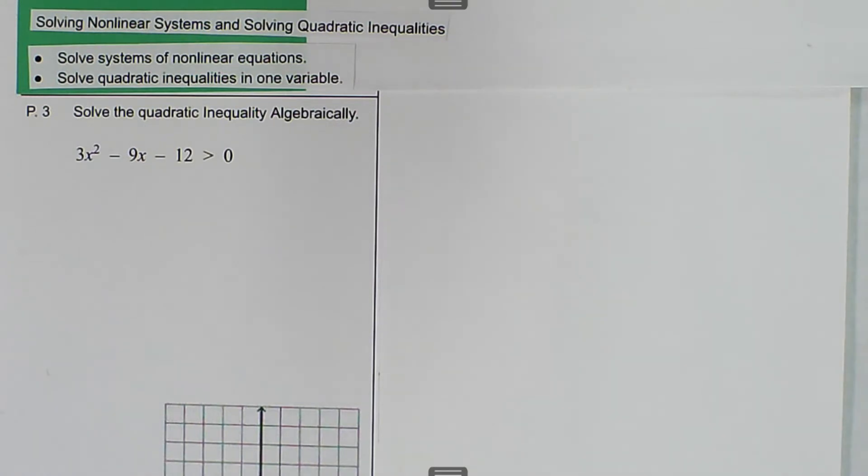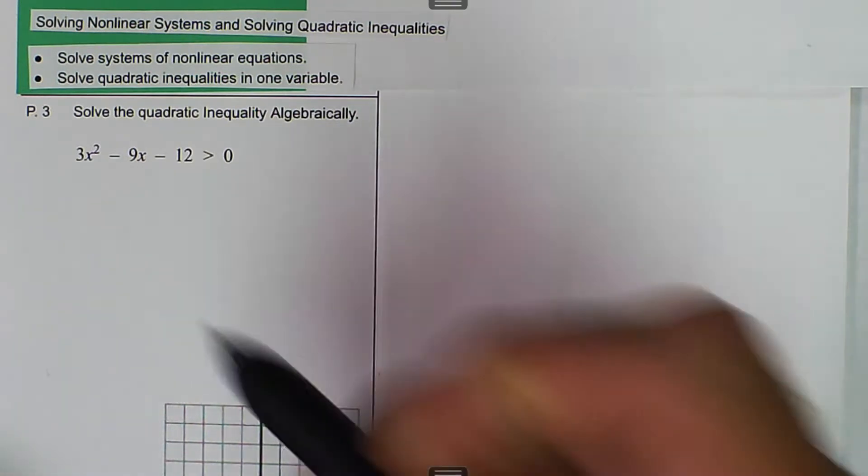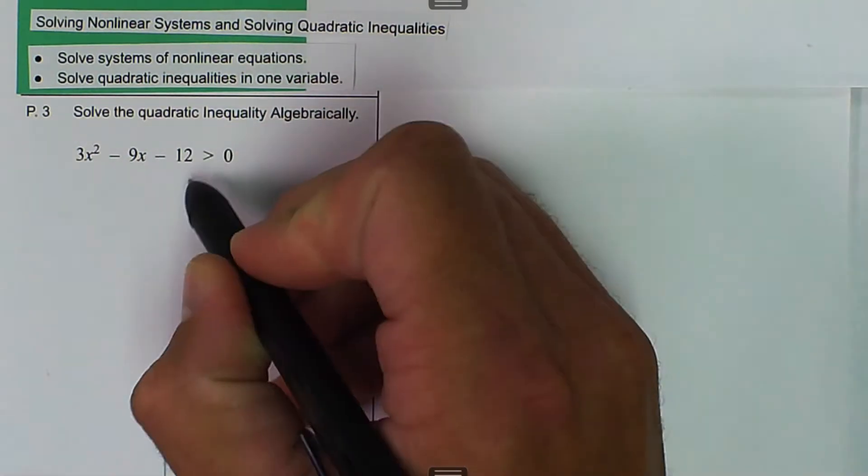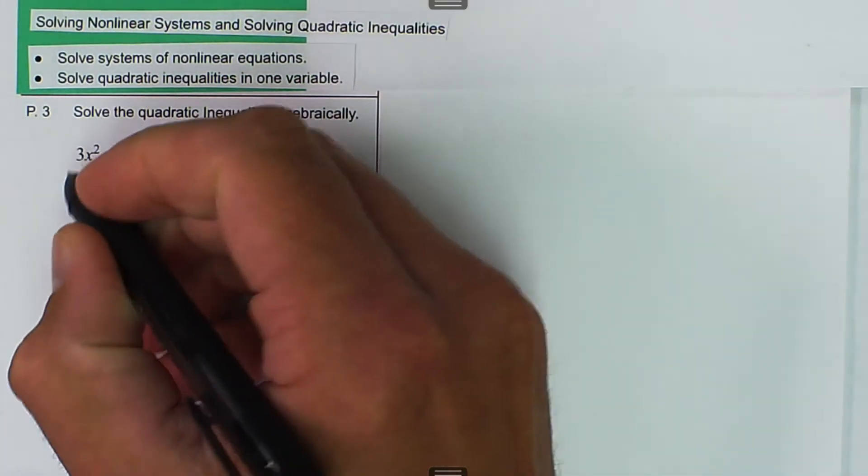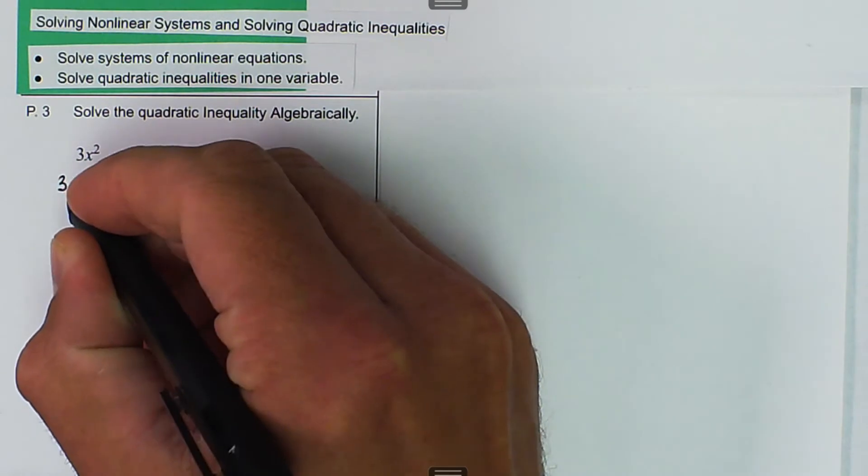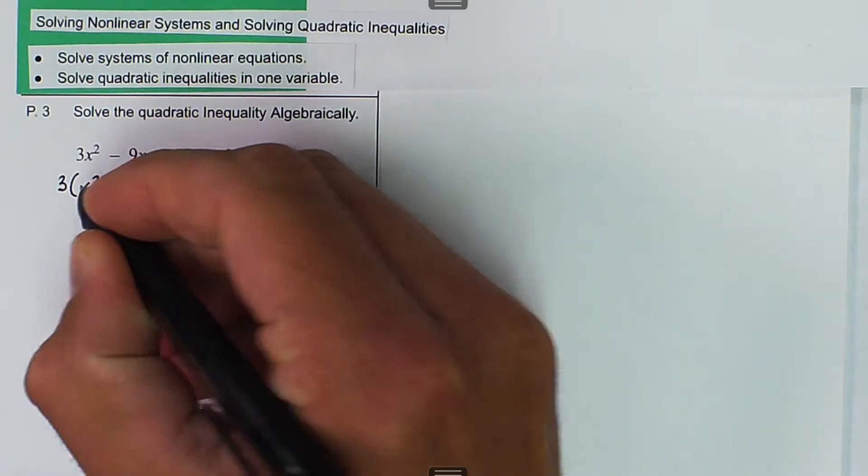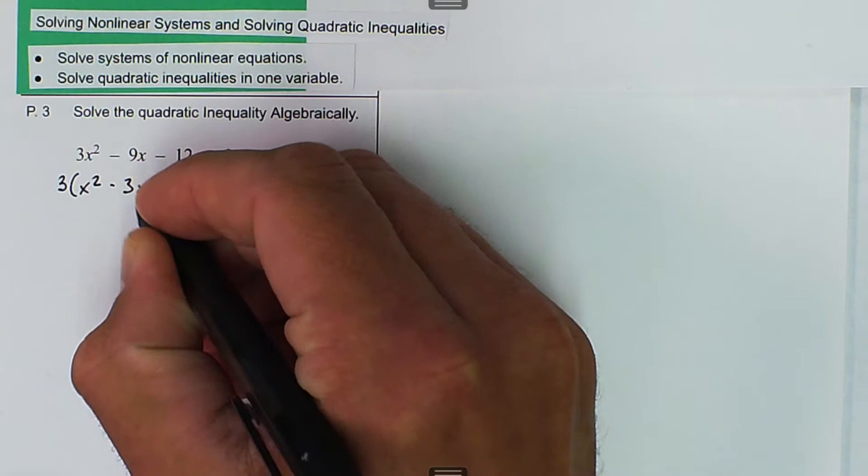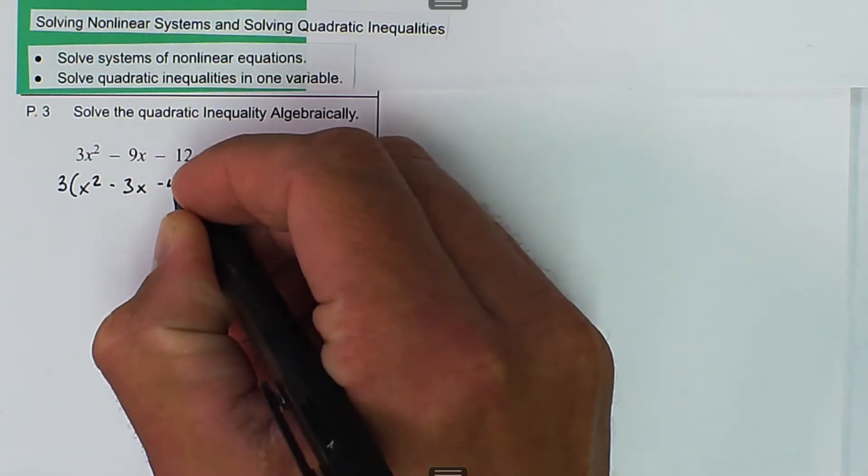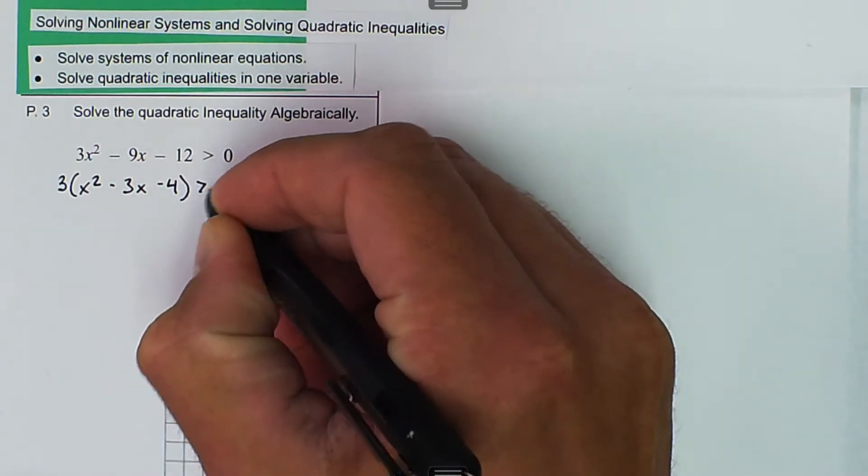One of the ways that we can solve this is we can factor, and the first thing we can do is take a 3 out because all these are divisible by 3, and so we get 3 times x squared minus 3x minus 4 is greater than 0.